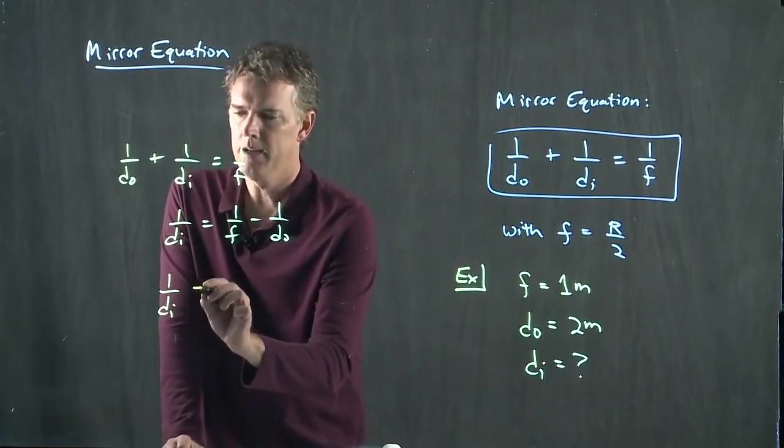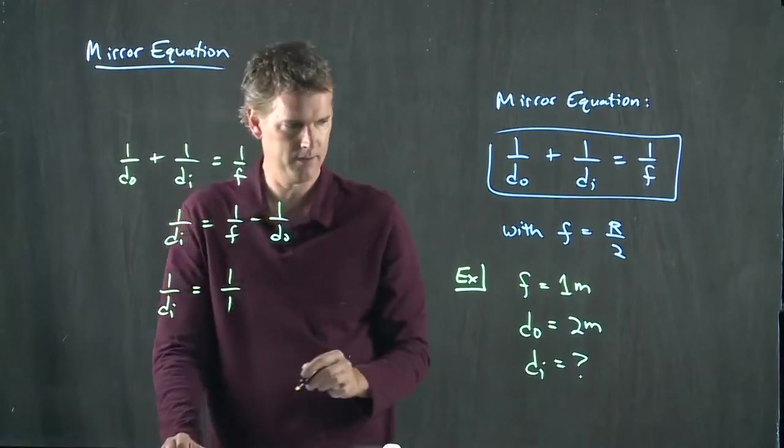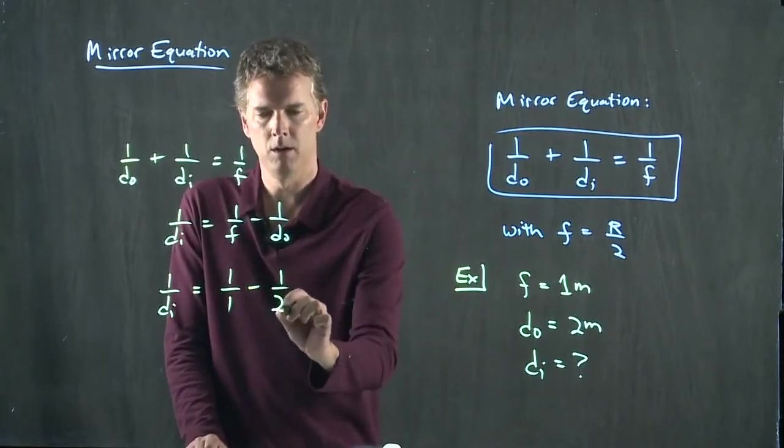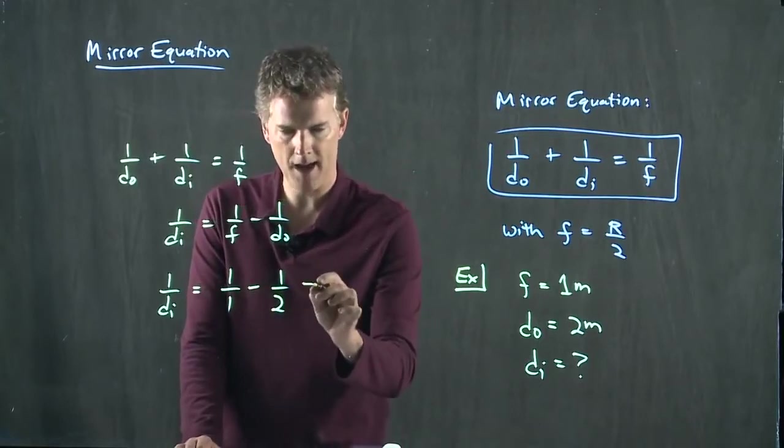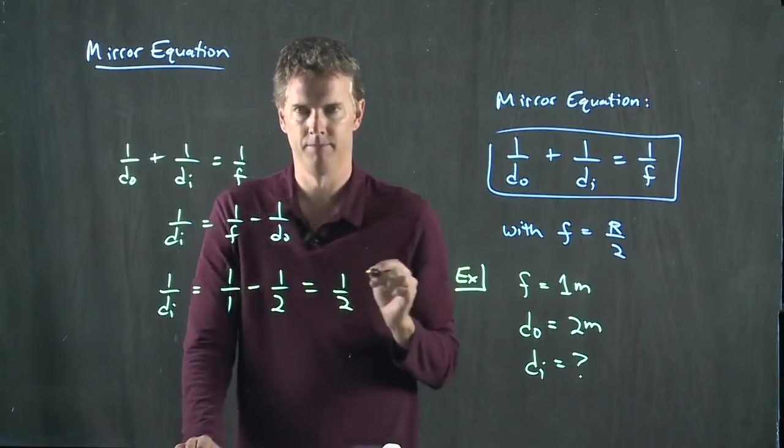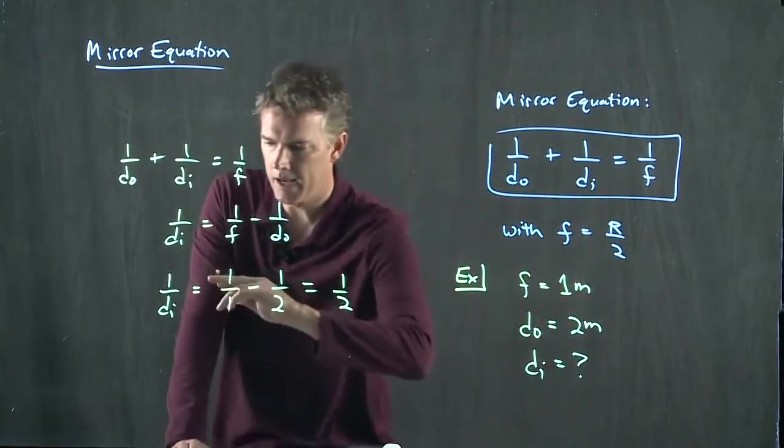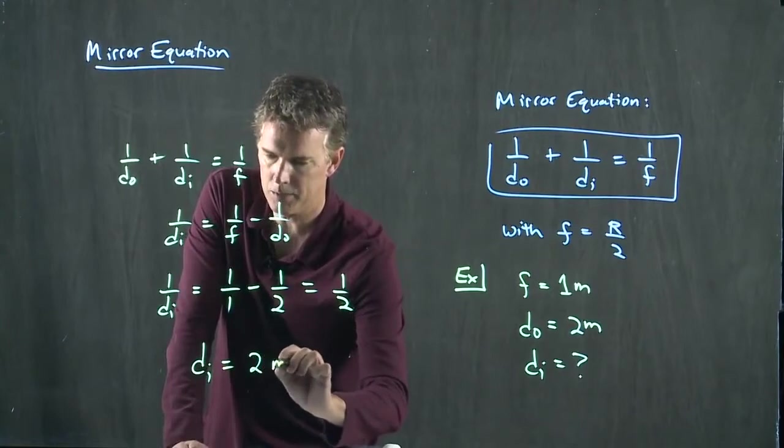1 over DI equals 1 over F, which is 1 over 1 minus 1 over DO, which is 1 over 2. All right. 1 minus a half is a half. So 1 over DI is equal to a half. And if I flip it back over, I get DI is equal to 2.